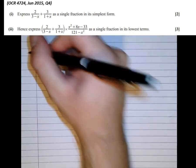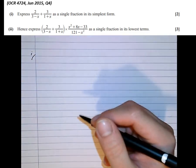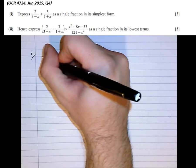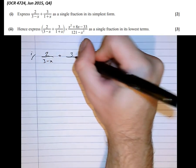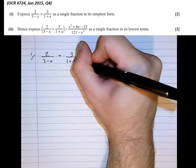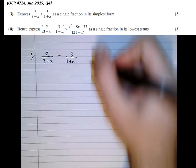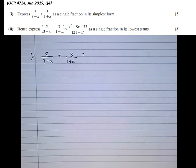So let's have a look at this first question, part one. Okay, so we've got 2 over 3 minus x plus 3 over 1 plus x. And we're asked to write that as a single fraction in its simplest form.